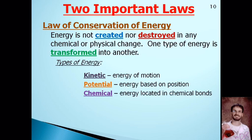Chemical energy is the energy found in chemical bonds. You can think of this as the energy that is in the cellulose material of wood, which gets released when we burn the wood. That is chemical energy stored in those bonds.